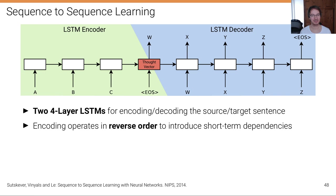It was the first paper to produce results that outperformed all of the previously developed hand-engineered rule-based systems for machine translation. The key behind this was a very well-engineered but simple model in combination with a lot of compute and a lot of data — one of the main insights of many deep learning successes: if you have enough data, the right model, and enough compute, deep learning can do amazing things.